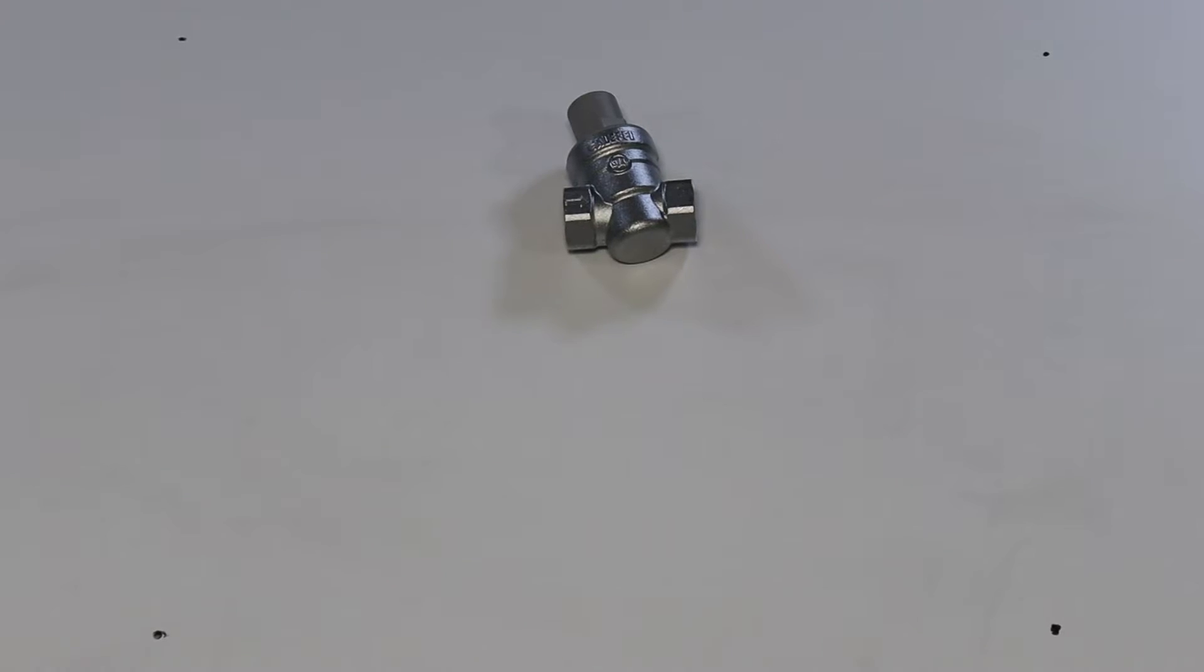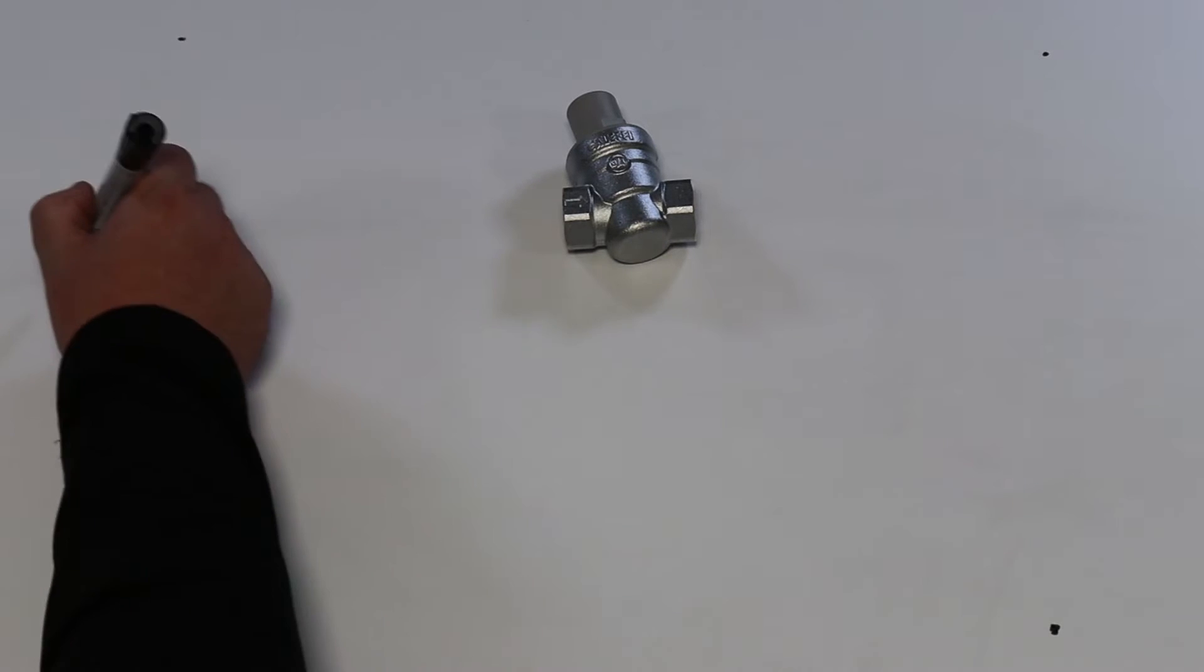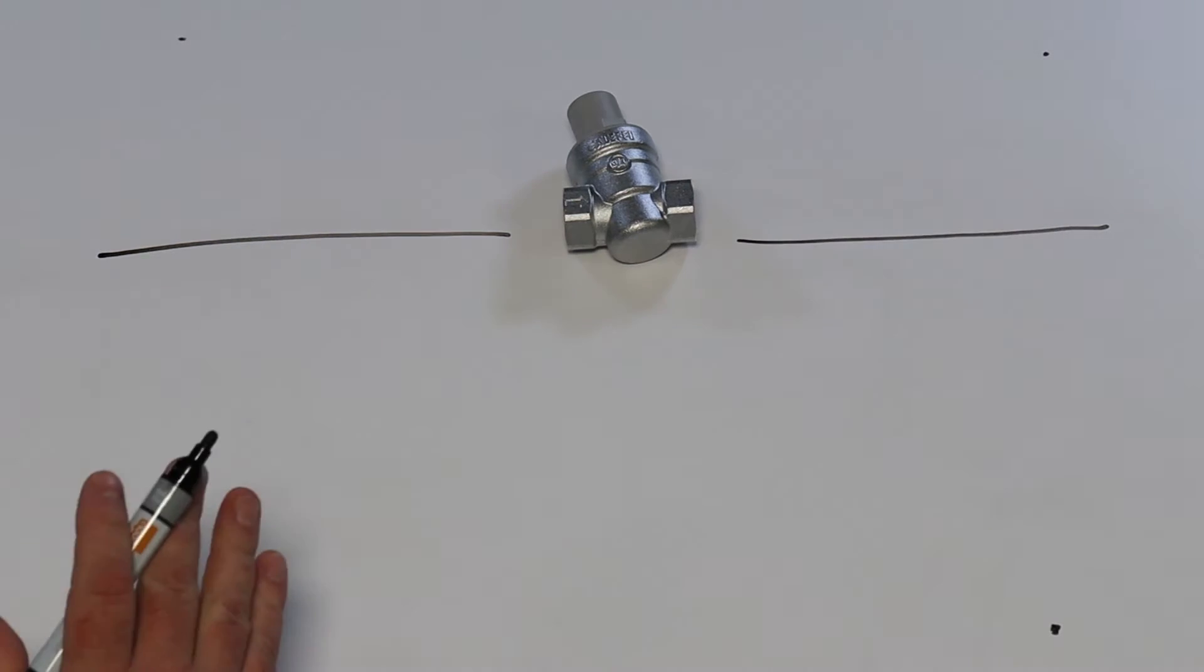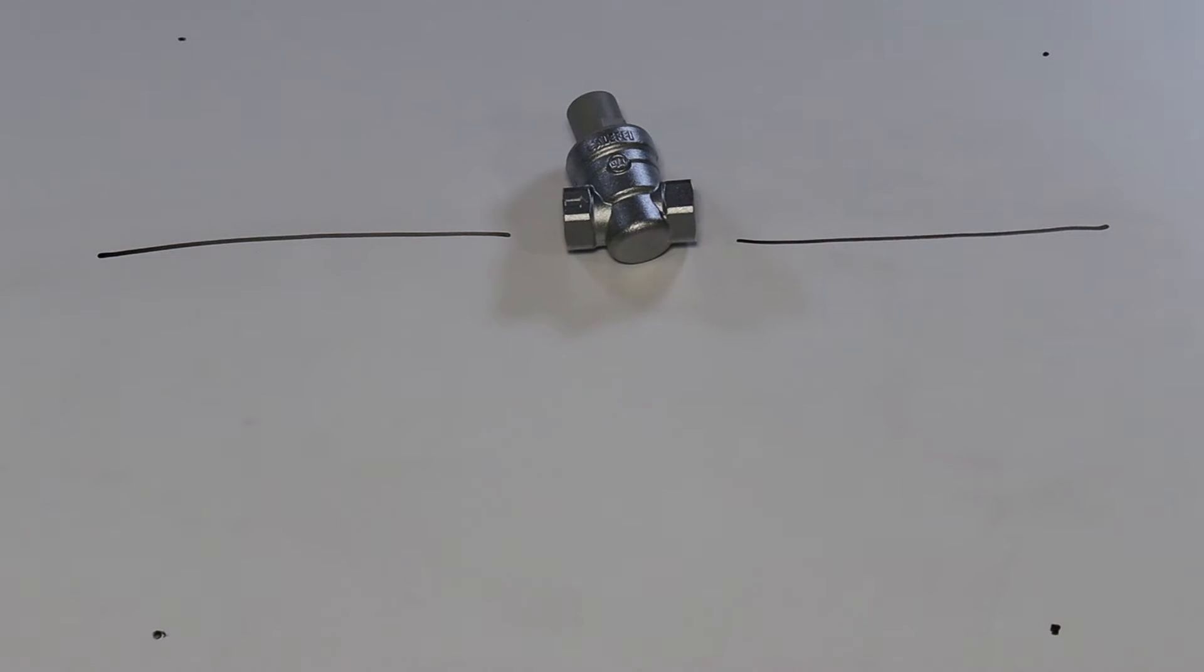So we're just gonna draw a quick diagram now to explain what we mean when we talk about high and low demand PRVs. So what we have here is incoming water supply, and that goes off to the building. Now that high demand PRV will be sized on a flow rate, which is determined by the amount of outlets that are open. Now when the building is at full occupancy and all those outlets are open, the valve will operate fine, no noises, no issues.